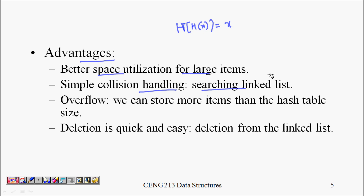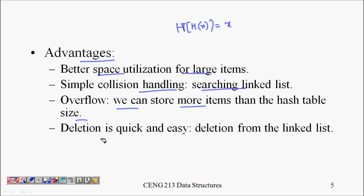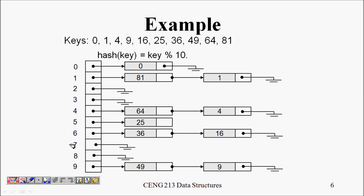Simple collision handling via linked lists. Overflow is possible — we can store more items than the hash table size because the linked list can grow beyond the table size. Deletion is also quick and easy from the linked list.